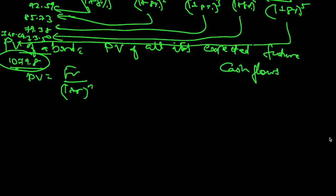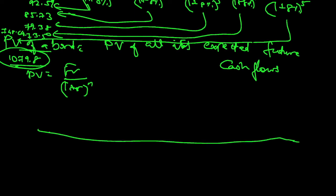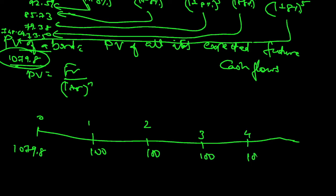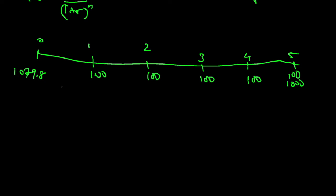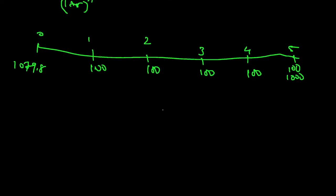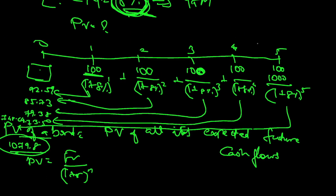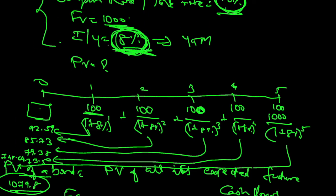So I am paying 1079.8 and I will keep getting 100 at the end of years 1, 2, 3, and 4; then 100 plus principal 1000 at the end of year 5. Now, why do I say the actual return — the yield to maturity — is 8% and not 10%? I will reinvest each coupon at the prevailing rate of interest, which is 8%.